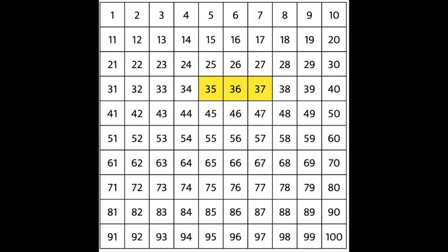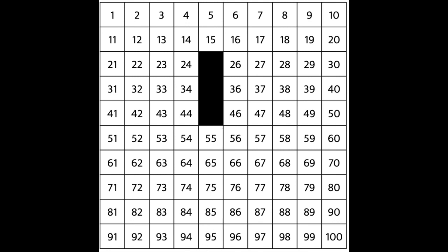Let's try it. Look, we have three more missing numbers. Are the missing numbers in a row or in a column? You're right, they're in a column because they're moving up and down. When we count numbers in a column, do we count by ones or by tens?